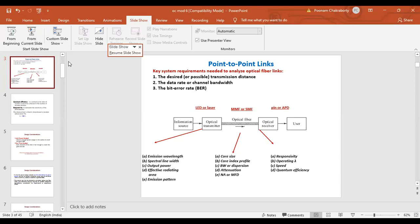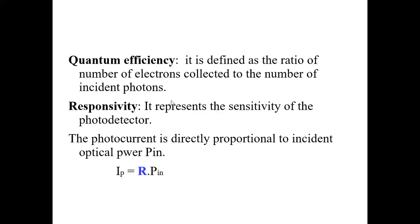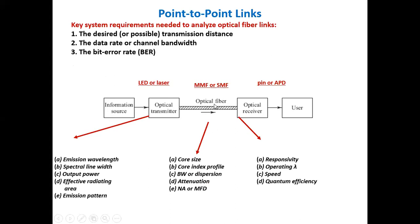The instructor asks the class: if designing a point-to-point link with source, optical fiber, and receiver — which component would you select first? Students give various answers. One student (Joshua) says transmitter first; another (Vaibhav) says fiber first, then receiver, then transmitter; another suggests receiver first, then transmitter, then fiber. The instructor asks them to think from the perspective of the end user rather than the designer.